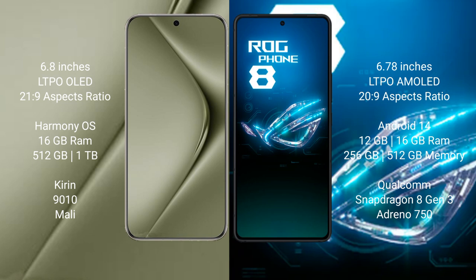Huawei Pura 70 Ultra runs on the HarmonyOS operating system. Asus ROG Phone 8 runs on the Android 14 operating system.